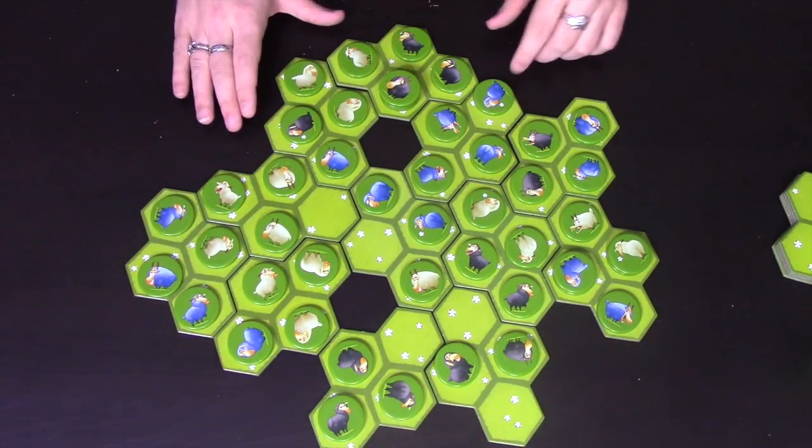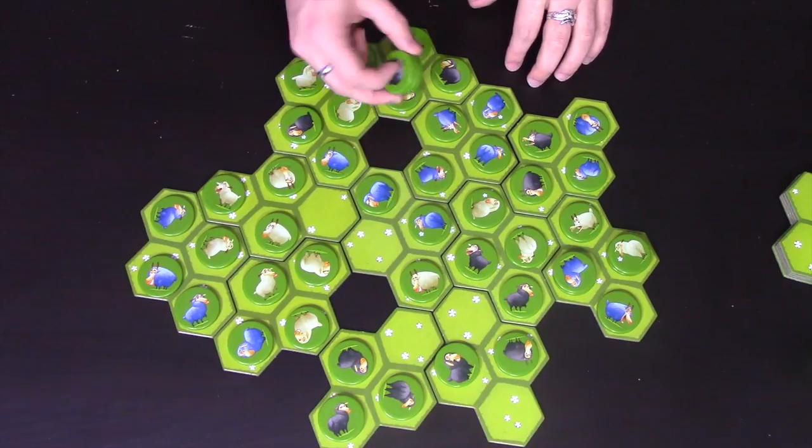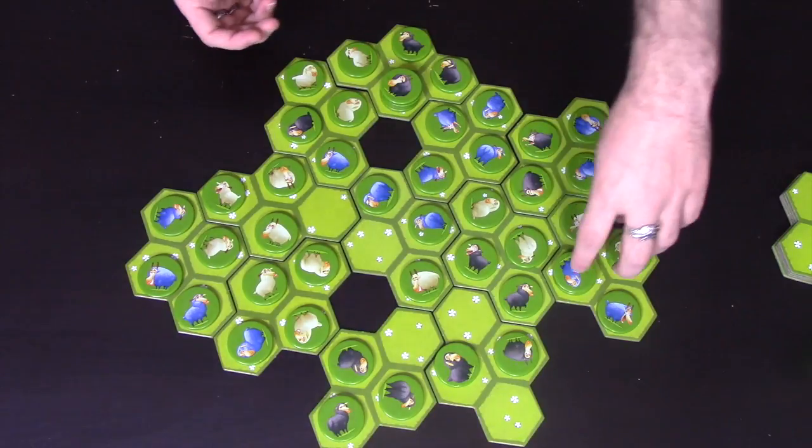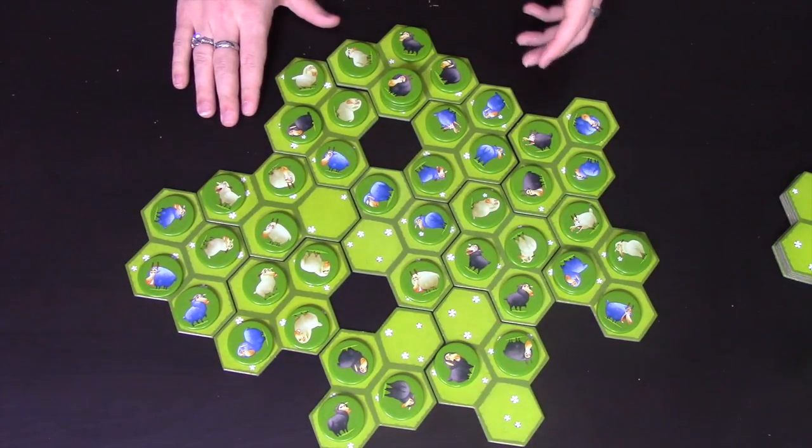So this is the end of the game of Battle Sheep. There are no more possible moves for any player. Black's got a big stack here that he's left stranded, and blue and white have got several here. And you just count how many visible sheep you have.